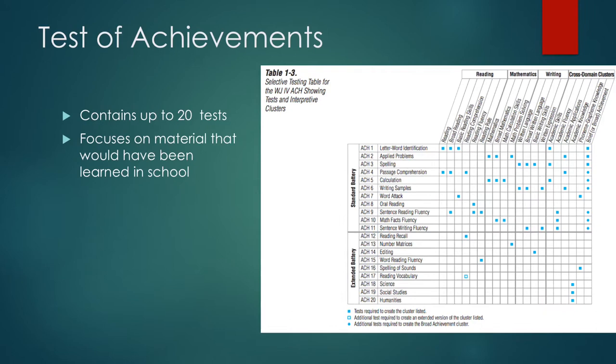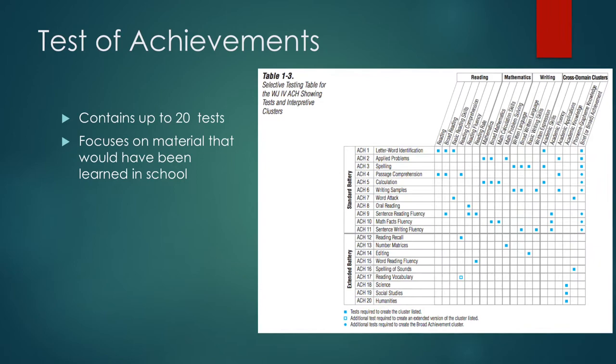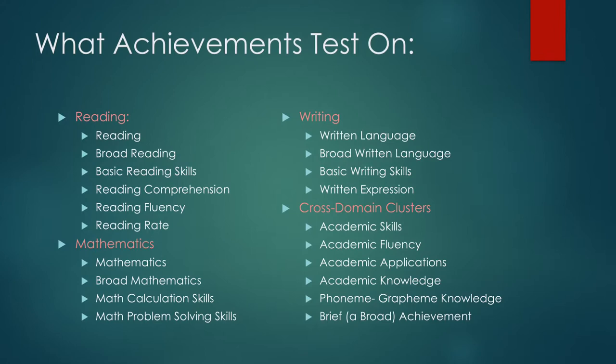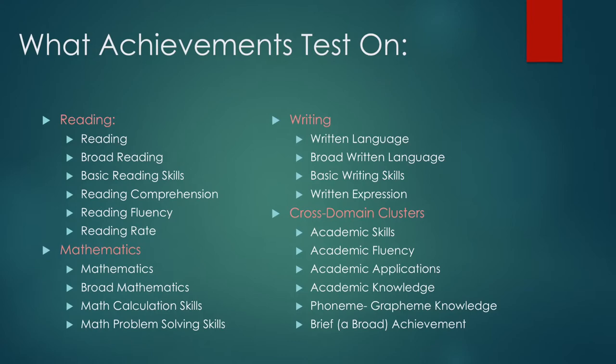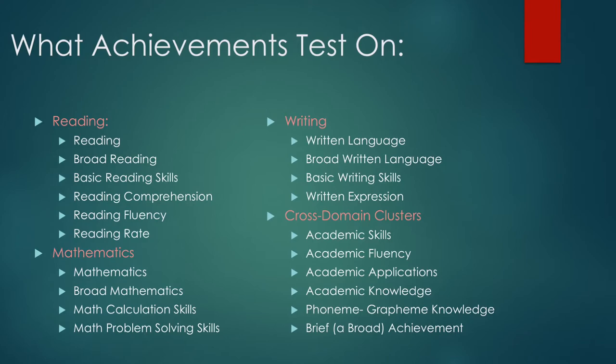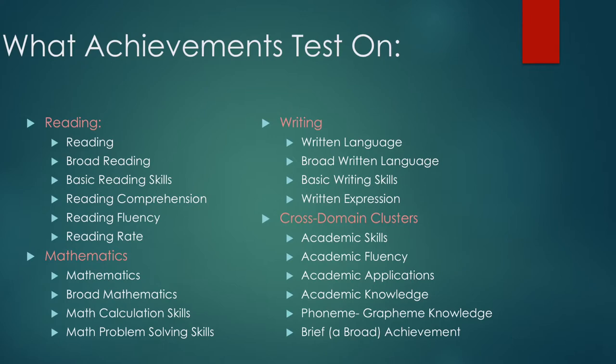Now let's take a look at the test of achievements. Just like the cognitive abilities test, this test is broken up into 20 subtests. This test focuses on material that would have been learned in school. The achievements section tests on reading, mathematics, writing, and across-domain clusters. As an SLP you'll want to focus more on the cognitive abilities test mentioned earlier, so I won't go through each one of these sections individually.